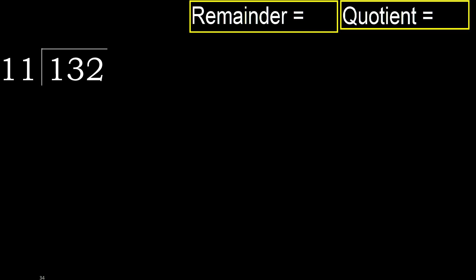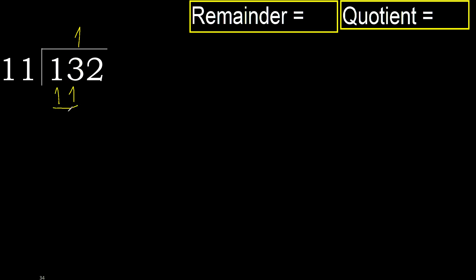132 divided by 11. 1 is less, therefore next. 13 is not less, therefore work with 13. 11 multiplied by which number is nearest to 13 but not greater? 11 multiplied by 1 is 11, which is not greater. 13 minus 11 is 2. Next.